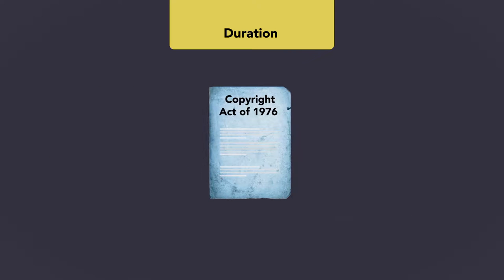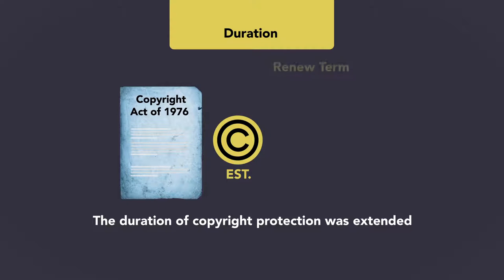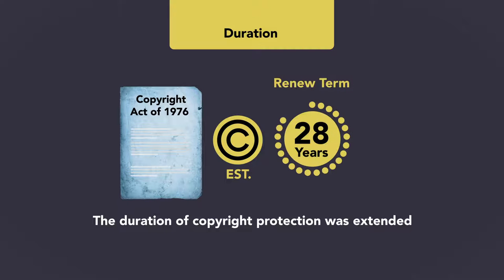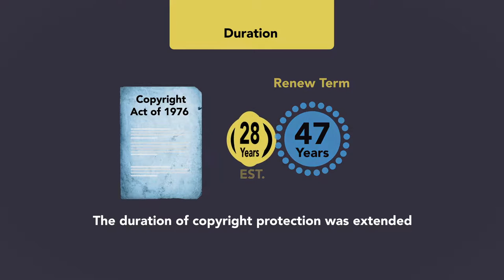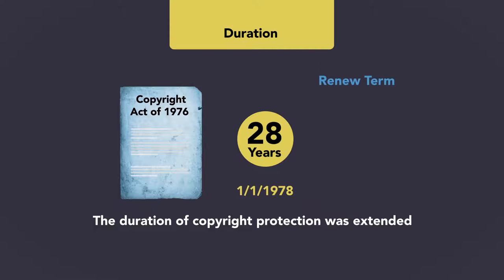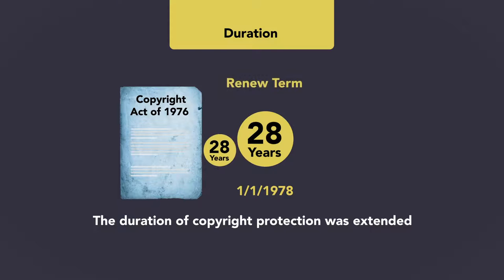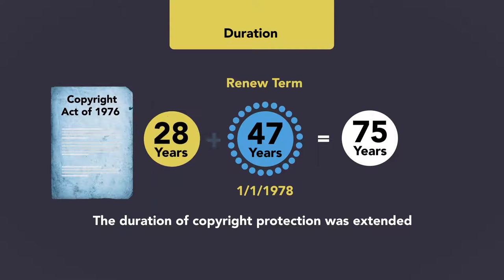Under the Copyright Act of 1976, the duration of copyright protection was extended. For copyrights already in existence, instead of a renewal term of 28 years, the 1976 Act allowed a renewal term of 47 years. So if a work was in its first term of protection as of January 1, 1978, then at the end of that first term it could be renewed for 47 more years. If the work was in its second term, or renewal term, as of January 1, 1978, the renewal term was extended from 28 years to 47 years, providing a total copyright life of 75 years.